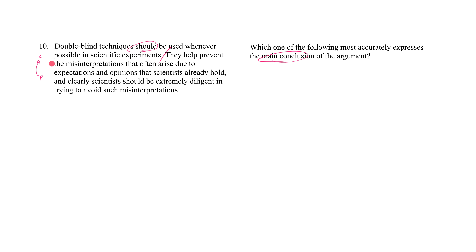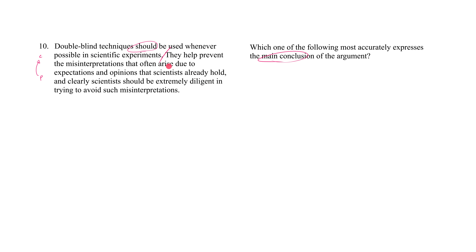That's merely a hypothesis you have to verify by reading the remainder of the stimulus. So let's see if our hypothesis is borne out by the empirical observation here. They — a referential phrase referring to the double-blind techniques — they help prevent the misinterpretations that often arise due to expectations and opinions that scientists already hold. So double-blind techniques help prevent certain mistakes. This is really just a detailed account of what kind of mistake we're dealing with.